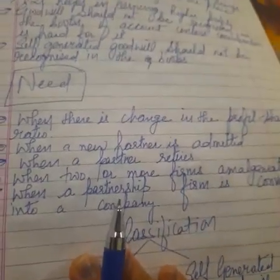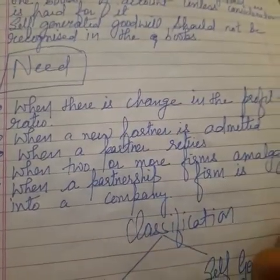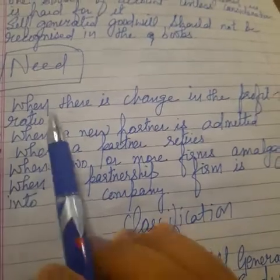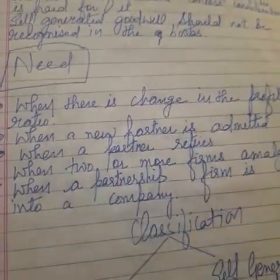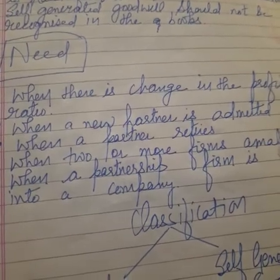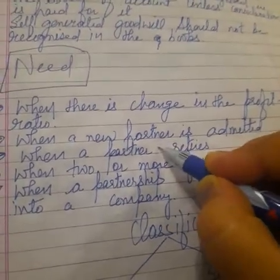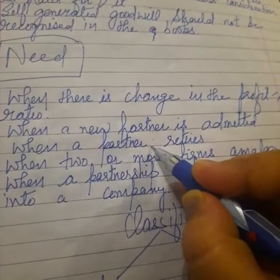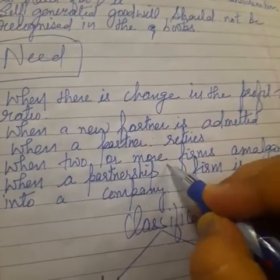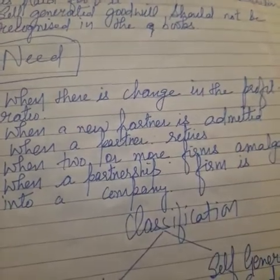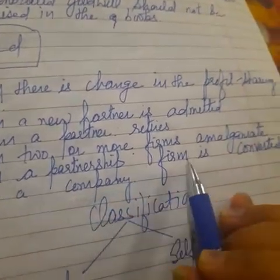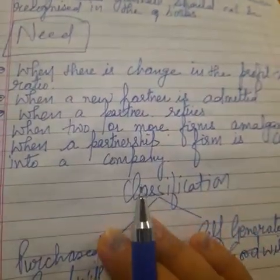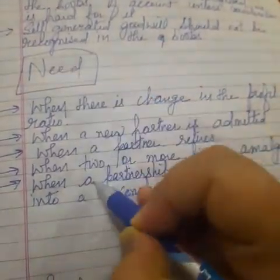Now the next question arises: why is there a need to calculate Goodwill? These are some instances when there is a need to calculate Goodwill. First, when there is a change in profit sharing ratio — when the profit sharing ratio of the partners changes, they need to calculate Goodwill. Then, when a partner is to be admitted or when a partner is leaving the firm. Also, when two or more firms are to be merged, and when a partnership firm is converted into a company — in all these cases, we need to calculate Goodwill.